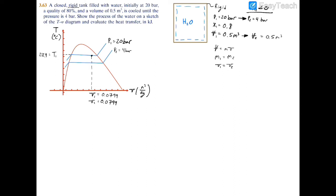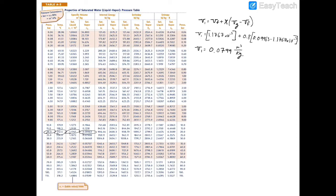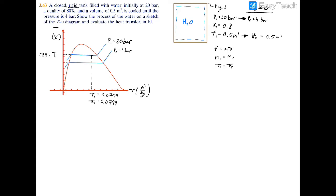Now we need to find the temperature at the second state. We know we have 4 bar and 0.0799 cubic meters per kilogram. Turning to the saturated table at 4 bar, we circle the saturated liquid and saturated vapor specific volumes. Our value of about 0.08 falls between VF to the negative third and VG of 0.46, so we must be in the two-phase region at the saturation temperature of 143.6 degrees Celsius. So T2 equals 143.6 degrees Celsius.